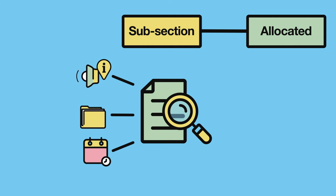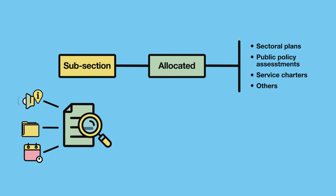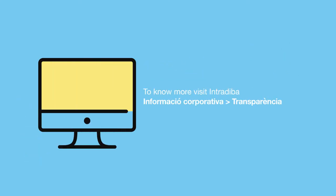Memos will be drafted on the following allocated content, among others: sectoral plans, public policy assessments, and services charters. The protocol and memos are available in the Intradiba space, Información Corporativa Transparencia, at transparencia.diba.cat.